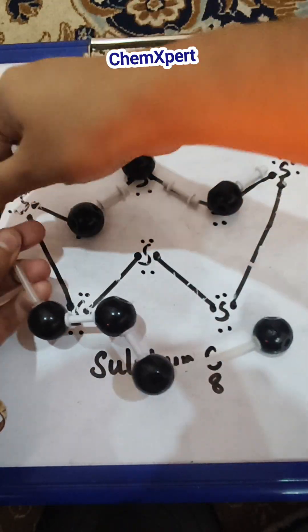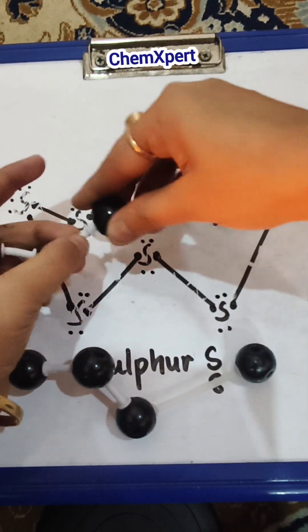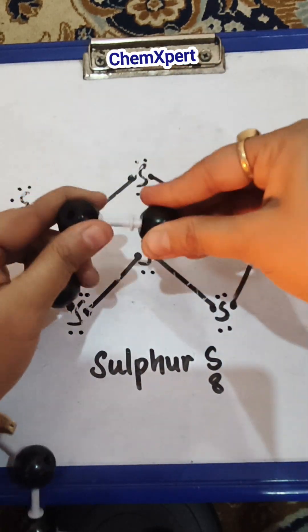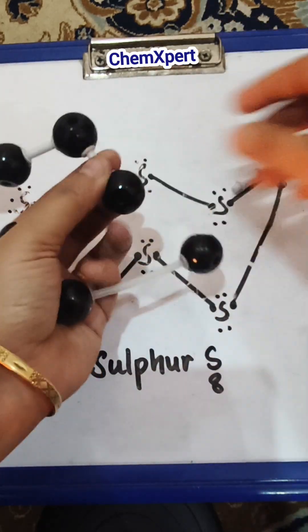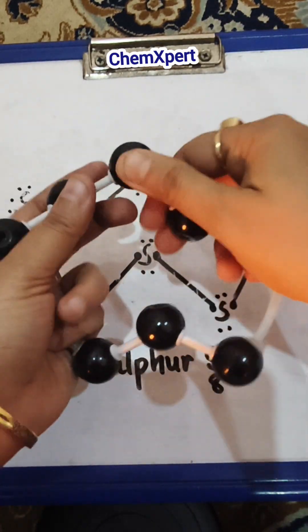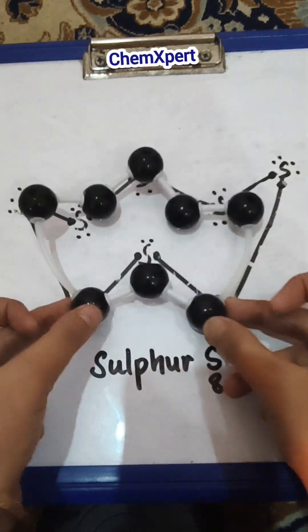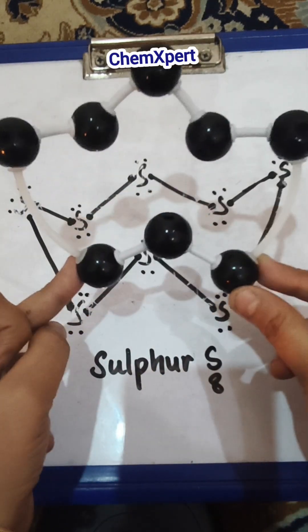You can observe here, I am joining the 8 sulfur atoms with each other with single bonds, and finally we get this structure which is W-shaped or crown-shaped.